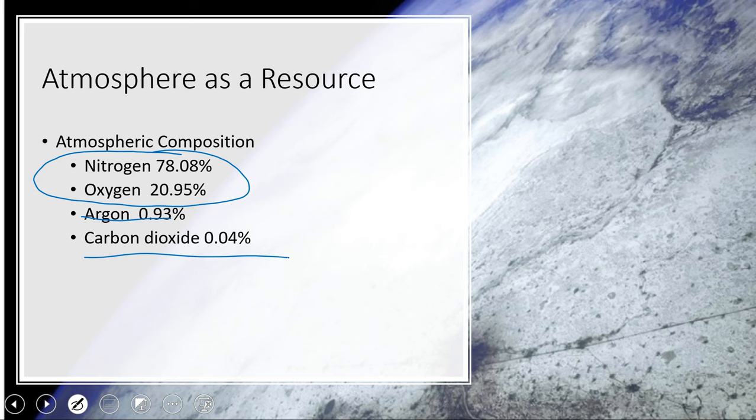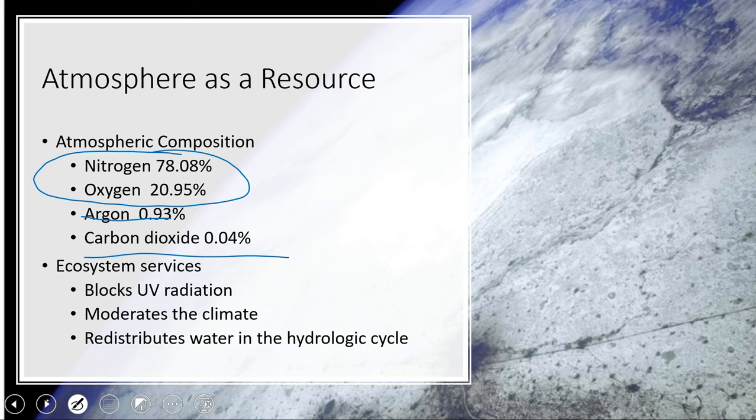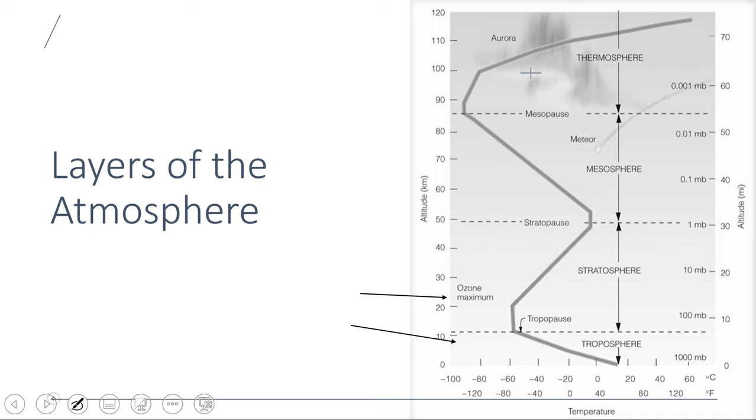The remaining really small percentage includes things like argon, carbon dioxide, and other trace gases. Some reasons the atmosphere is important, aside from offering essential gases for living organisms like oxygen and carbon dioxide, include ozone in the stratosphere that blocks ultraviolet radiation, the natural greenhouse effect that helps prevent it from getting too cold at night, and redistribution of water in the hydrologic cycle.